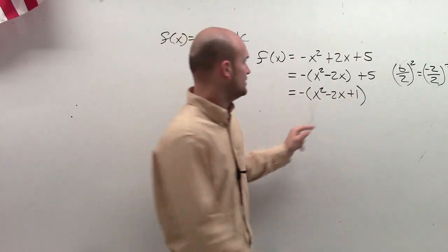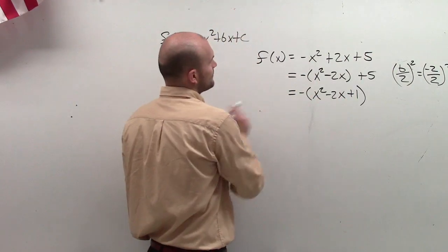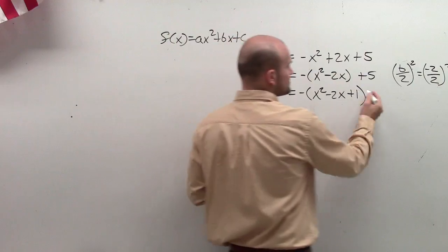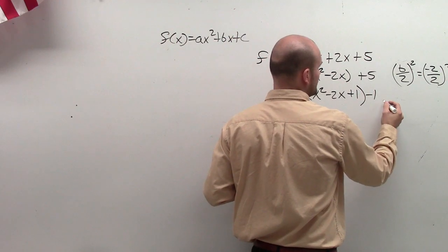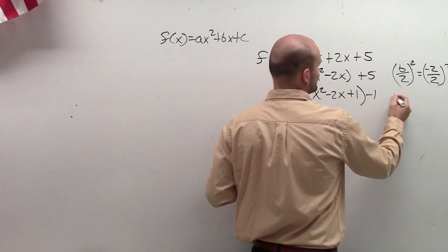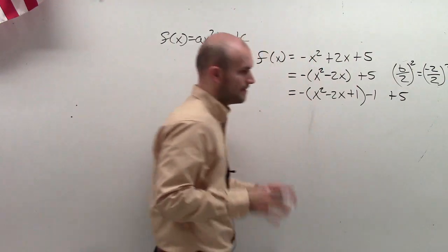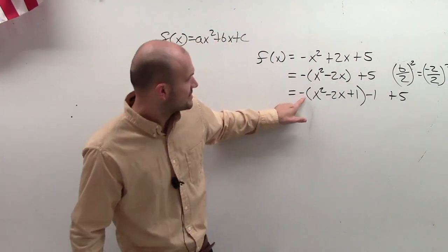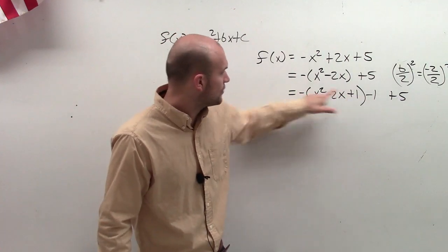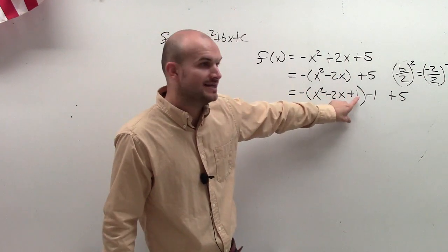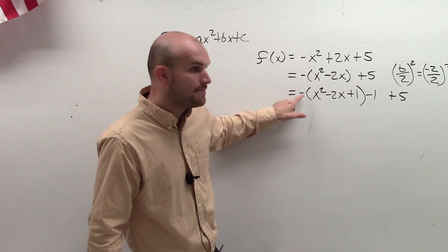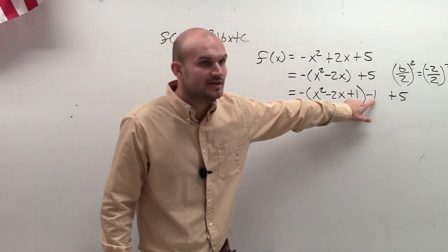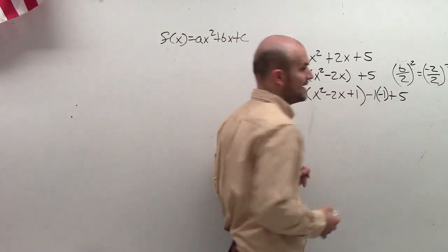But remember, if I'm going to add 1, this is a problem. So if I add 1, now I'm going to subtract 1, and then plus 5. But here's, again, we need to remember, here's where a lot of mistakes came in. Since I'm multiplying this positive 1 by negative 1, that's really a negative 1. So I need to make sure I multiply by this negative sign to this negative 1. So I multiply negative 1 again.